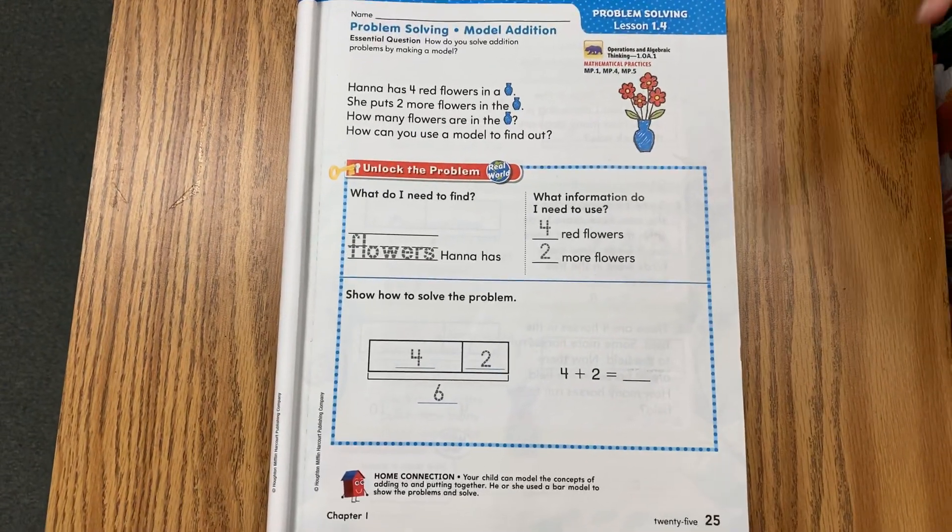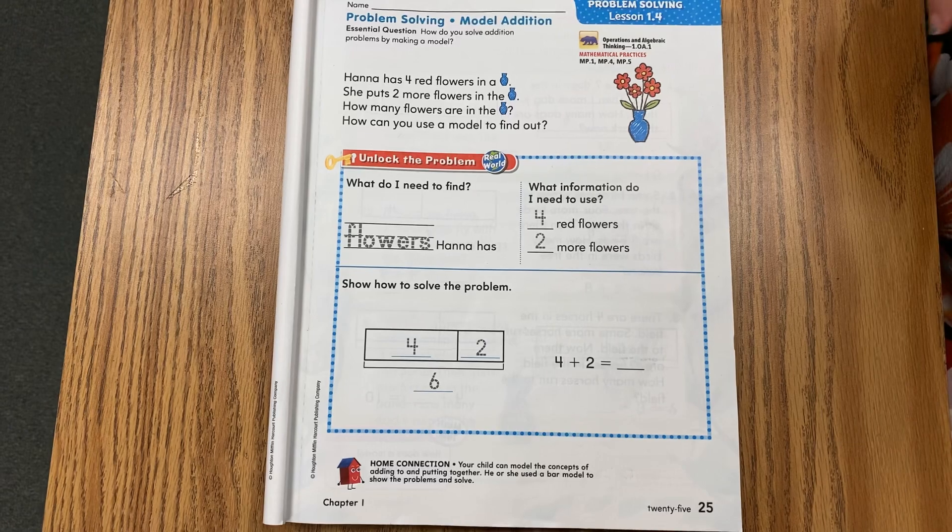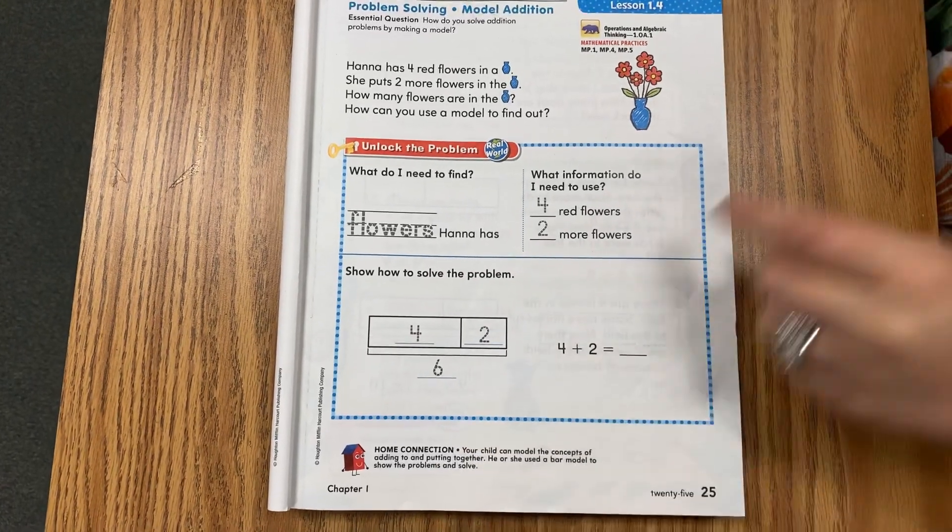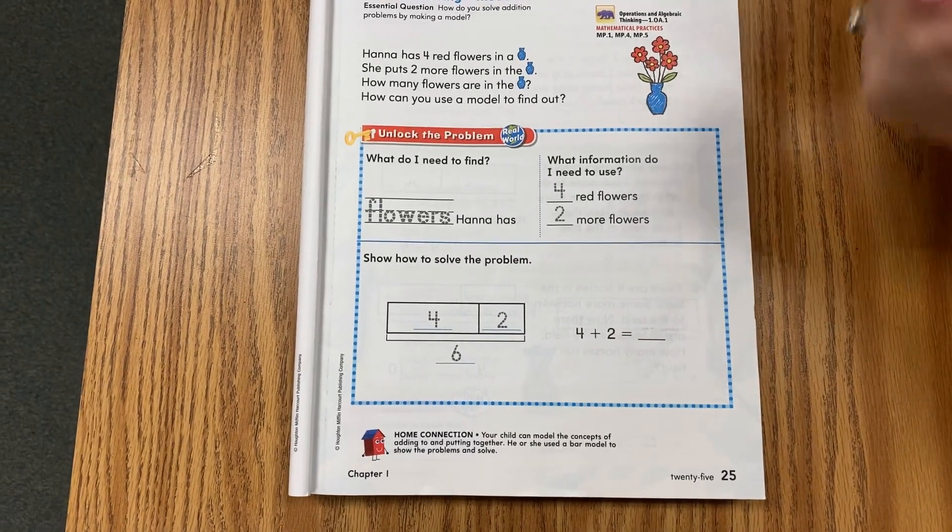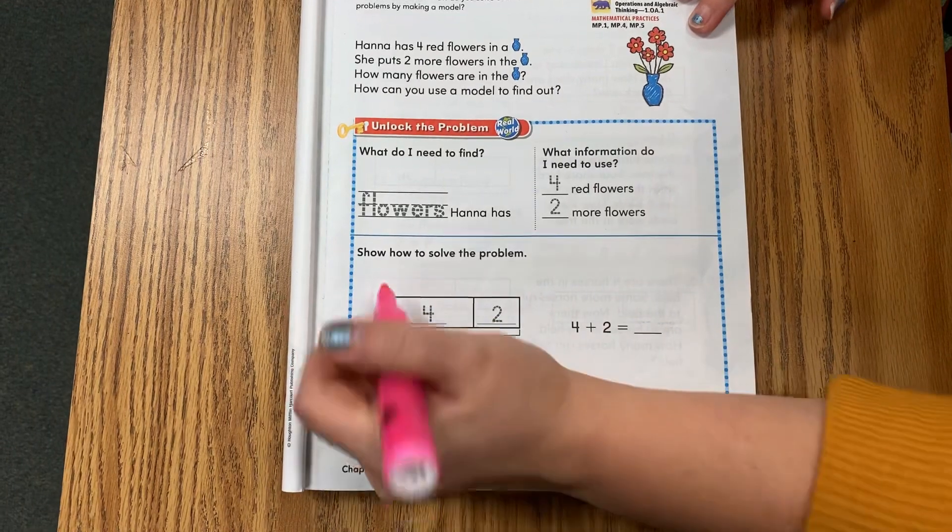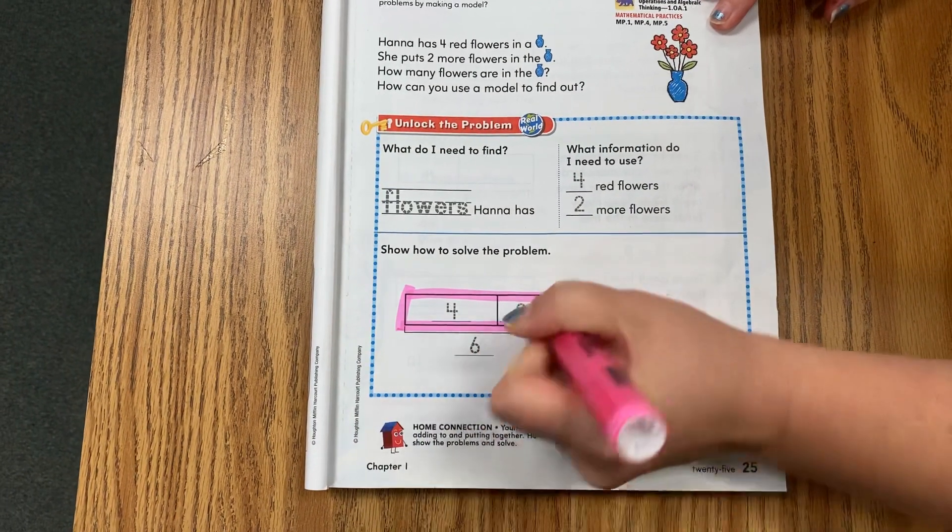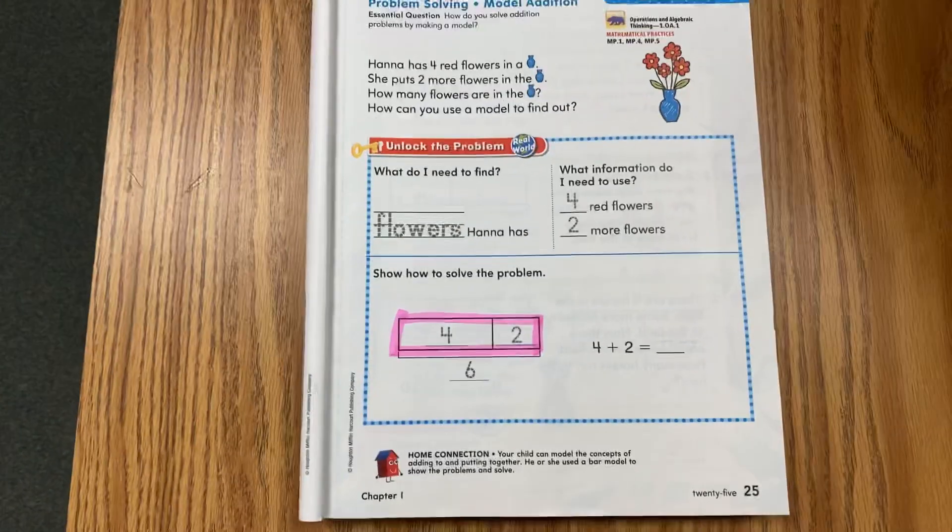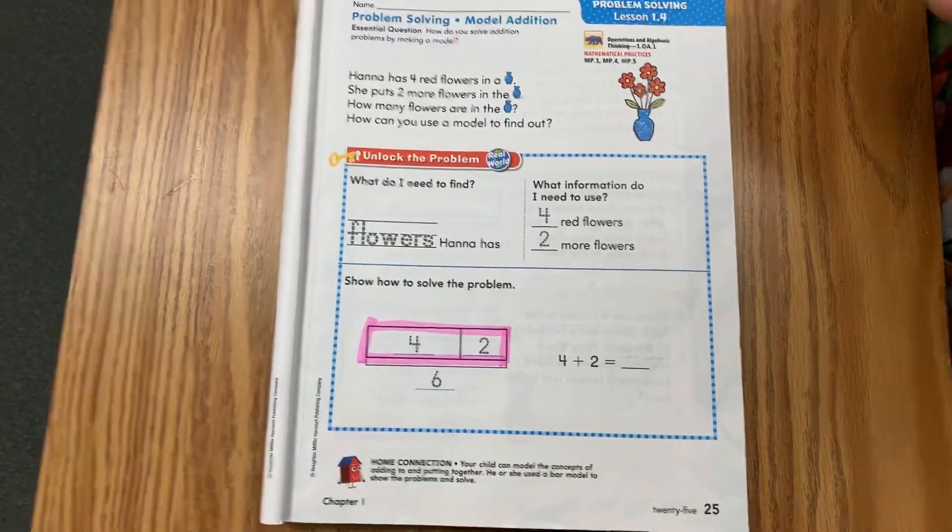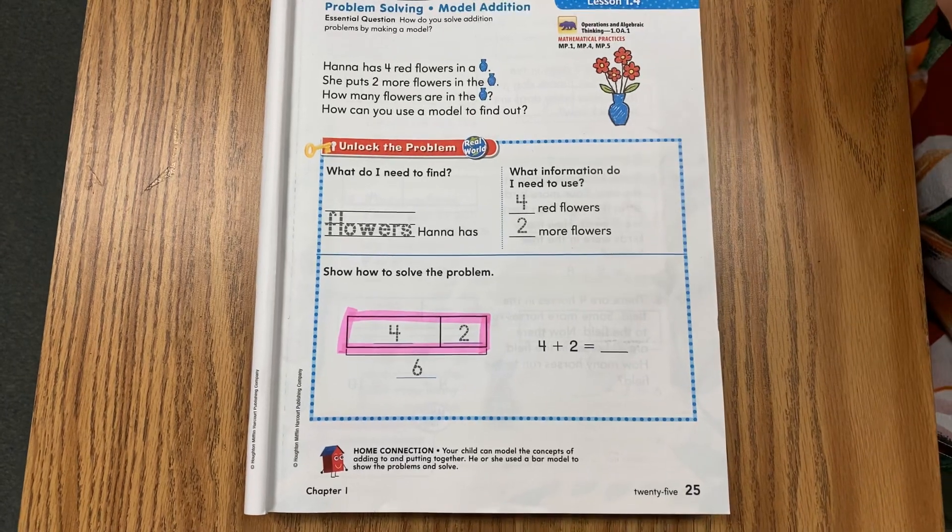We're going to use addition problems and solve them with a bar model, which is here as you can see. It looks like a bar—that's why they call it a bar model. The bar model is the squares, the rectangle.